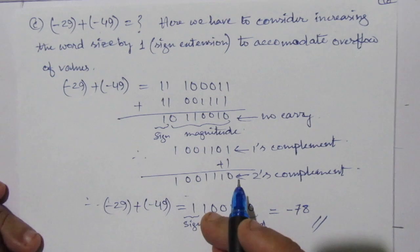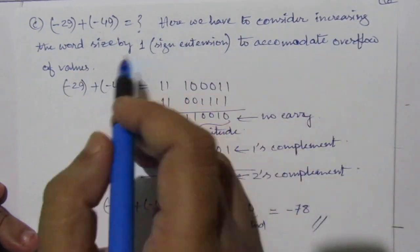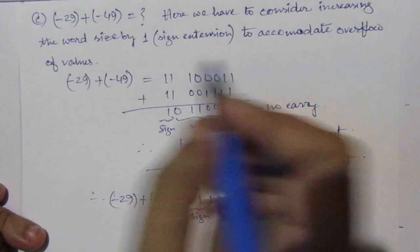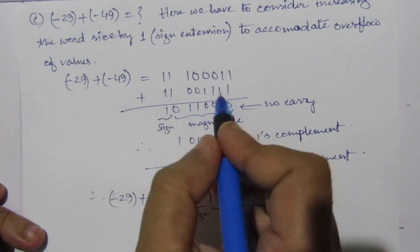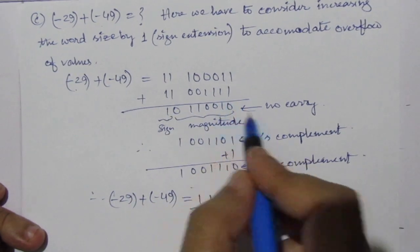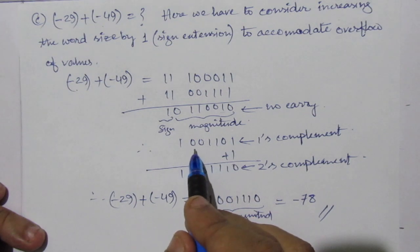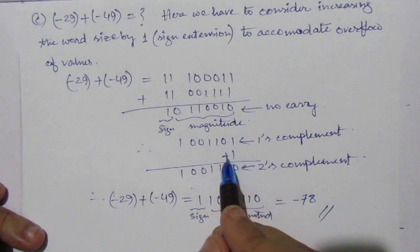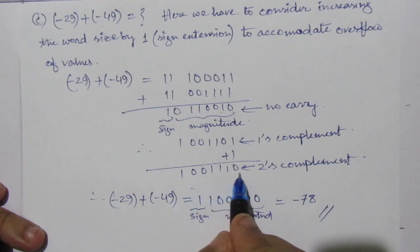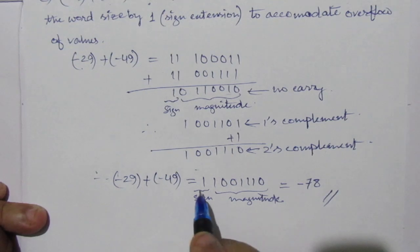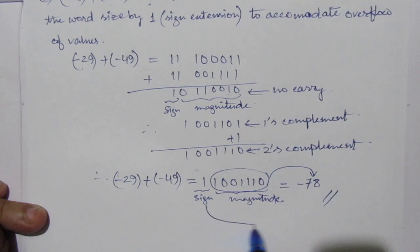In the third part, we have -29 plus (-49). Here we must increase the word size to avoid overflow. After adding the 2's complement representations of both numbers, there is no carry. We find the 2's complement of the result: the 1's complement is 001101, and adding 1 gives 001110. Wait — the magnitude is 0011110, and the sign is negative. Converting this gives 78, so the result is -78.